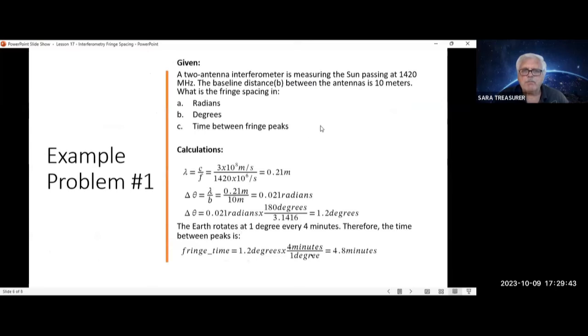Let's do an example. You have a two-antenna interferometer measuring the sun at 1420 megahertz with a baseline distance B between the antennas of 10 meters. What is the fringe spacing in radians, degrees, and time between fringe peaks? First you calculate the wavelength. That's the speed of light over frequency: 3 times 10 to the 8th meters per second over 1420 times 10 to the 6th per second equals 0.21 meters.